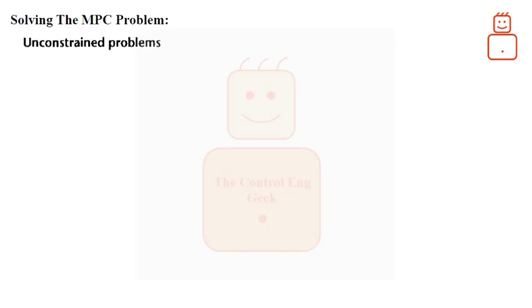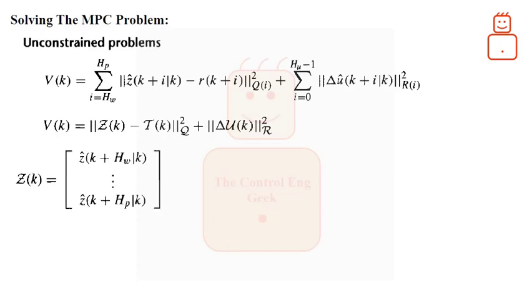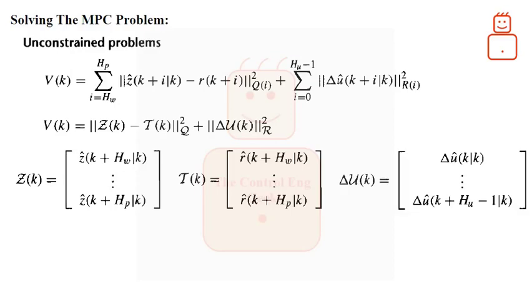Given that, the cost function that our MPC attempts to minimize is given as, this function can be written in a vector and matrix format as shown. In which, we have defined the vectors as following. Z of K is the stacked vector of the future prediction of the controlled process output. Tau of K is the desired reference future trajectory. And, delta U of K is the stacked vector of the future control changes.